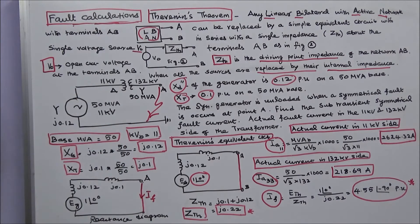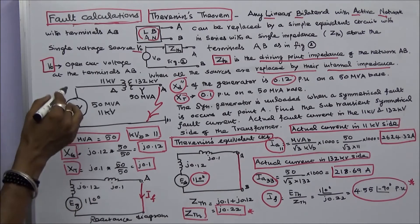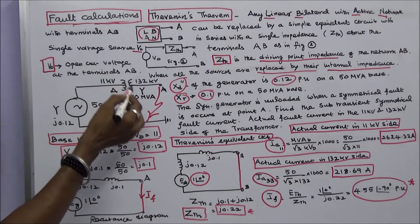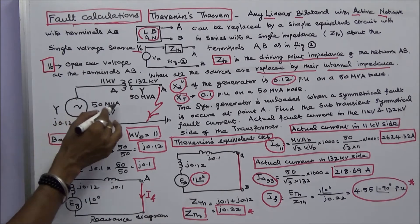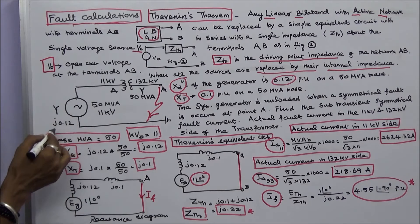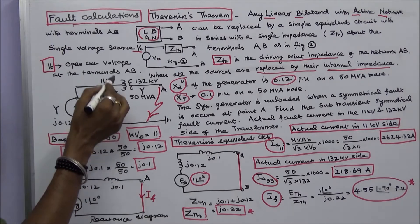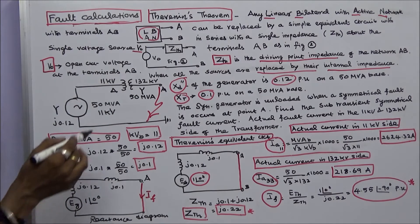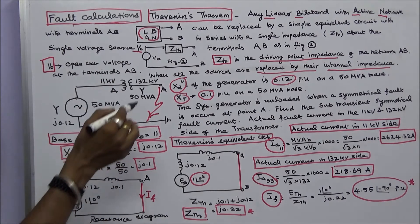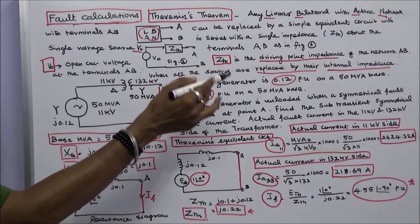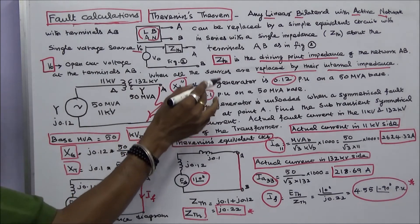Now we will work out one problem. A synchronous generator is unloaded and connected to an 11 kV to 132 kV transformer. The rating of the generator is 50 MVA. The sub-transient reactance is j0.12 per unit. The reactance of the transformer is j0.1 per unit. The rating of the transformer is 50 MVA. The X''d of the generator is 0.12 per unit on a 50 MVA base. Transformer reactance is 0.1 per unit on a 50 MVA base.